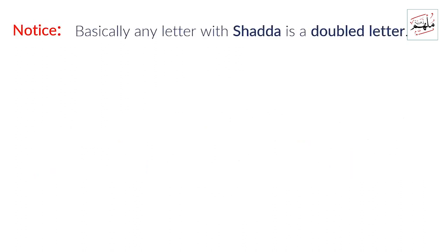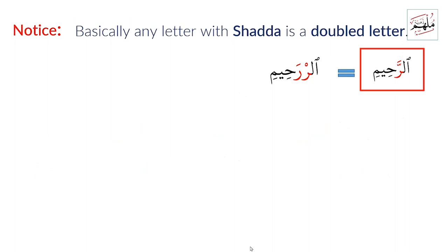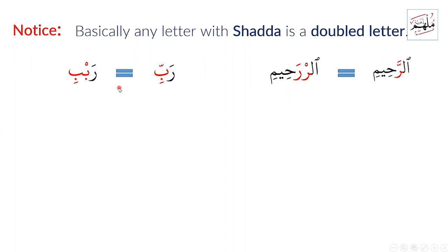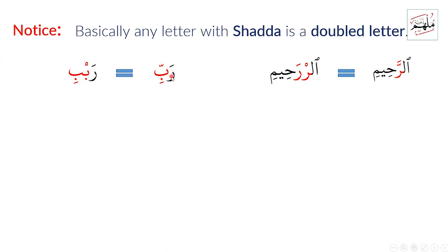Notice: any letter with Shadda is a double letter. When we say 'ar-rahim,' it is equal to 'ar-rahim' written out, but in Arabic we don't write it that way — we write it with a Shadda. Another example: 'rabbi' — actually there are two ba letters, but in Arabic we put a Shadda, so we write it 'rabbi,' not separately.